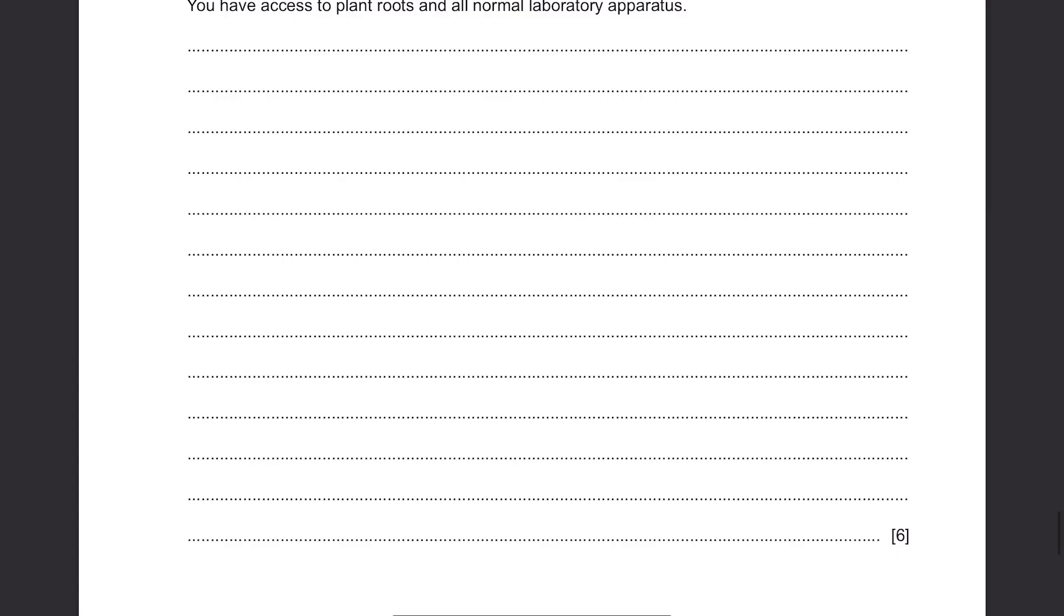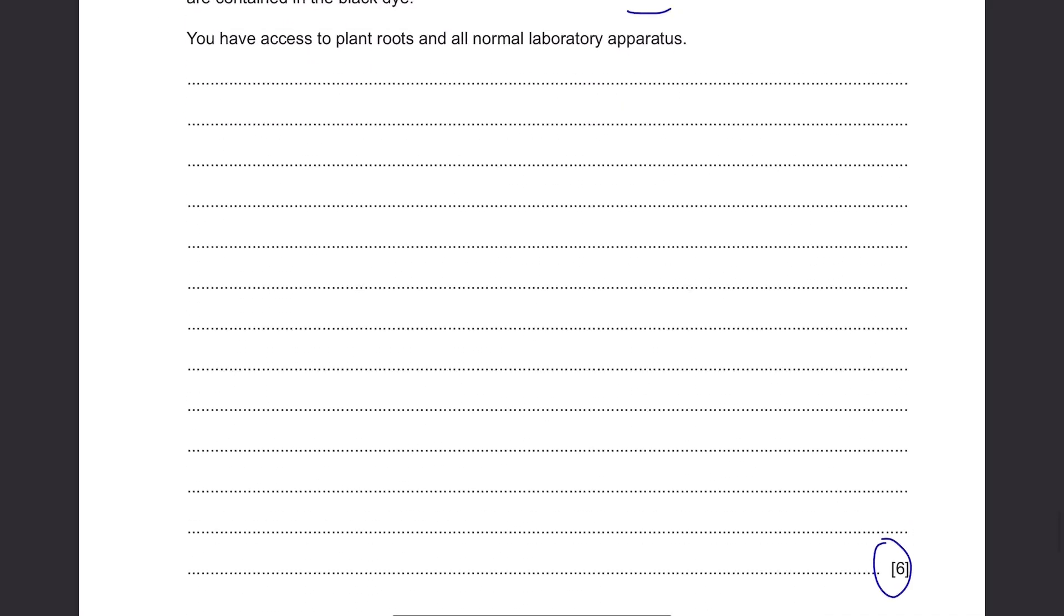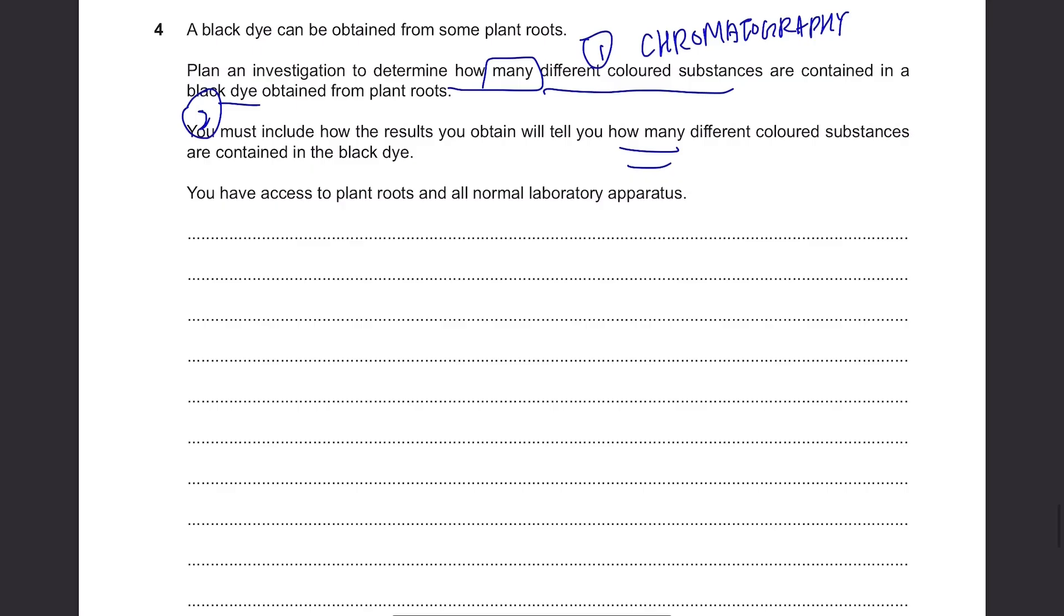Now we have this long space and you only get 6 marks by just describing the process of chromatography. You'll probably just get 3 marks for the entire process of chromatography. Well, surprisingly, what's important in this question is how you're gonna take a black dye from the plant roots. Because these plant roots don't just give black dye to you, you have to extract it.